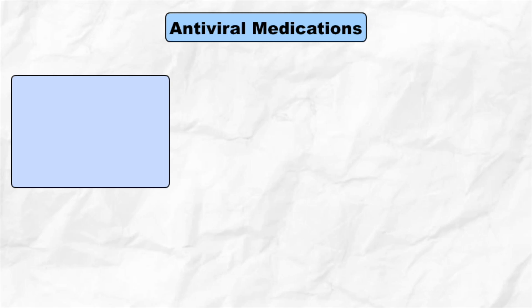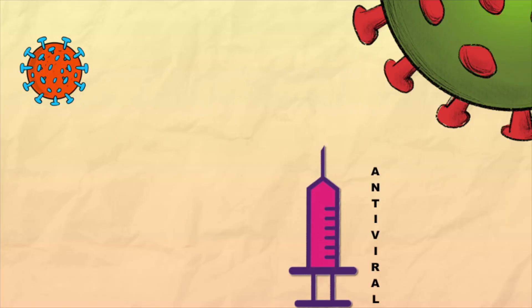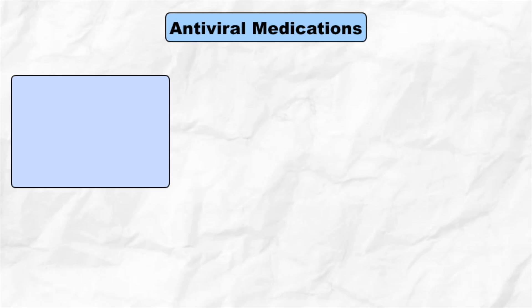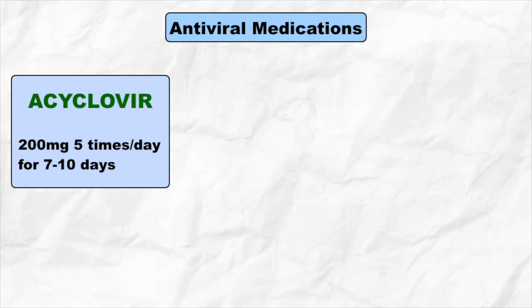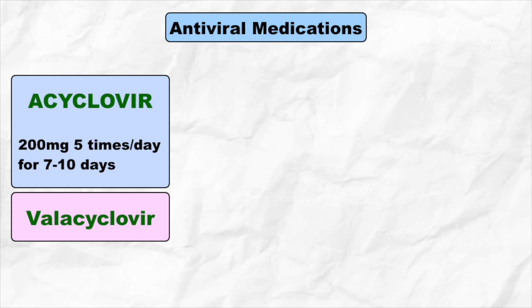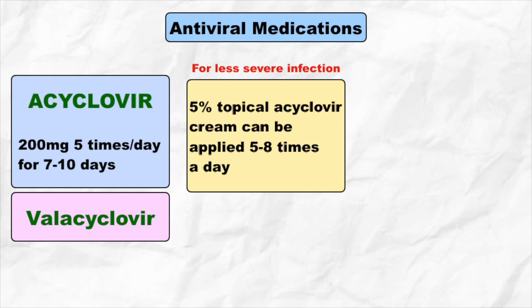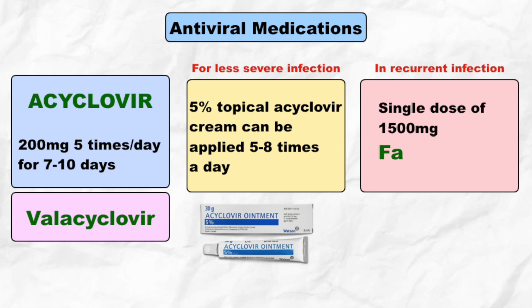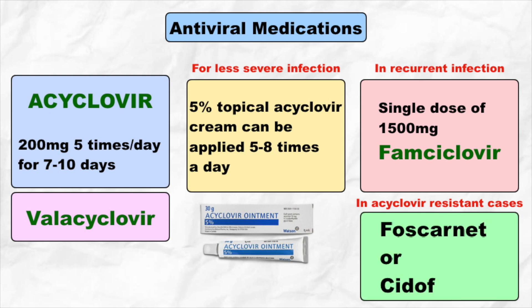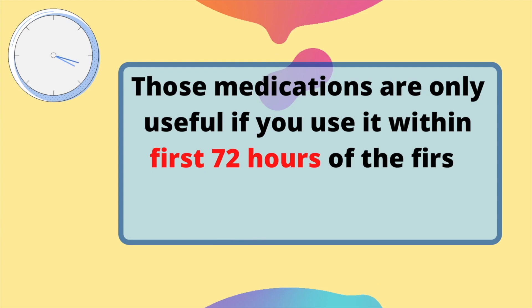Now let's see which antiviral medications are helpful for oral herpes. Antiviral medications are drugs that help our body fight against viruses causing diseases, reduce their severity, or act as a preventive method. Acyclovir tablet is commonly used at a recommended dose of 200mg 5 times a day for 7–10 days. Valacyclovir, a prodrug of acyclovir, can also be used. In less severe cases, 5% topical acyclovir cream can be applied on the infection site 5–8 times a day. In recurrent infection, a single dose of 1500mg famciclovir is highly effective. For acyclovir-resistant cases, foscarnet or cidofovir can be used. Importantly, these medications are only useful if taken within the first 72 hours of the first tingling sensation.